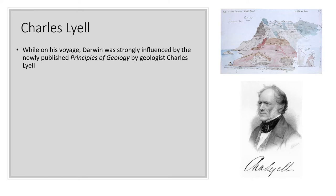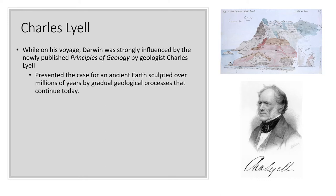Charles Lyell is a really important character in the story of Darwin's theory of evolution. While Darwin was on his voyage, he came across Lyell's book 'Principles of Geology.' In it, Lyell presents the idea of a very old earth — millions of years, not 6,000 years — and the idea that the earth looks the way it does because of gradual geological processes happening today. When we think about earthquakes and mountain ranges getting taller, Lyell argued these require a lot of time.